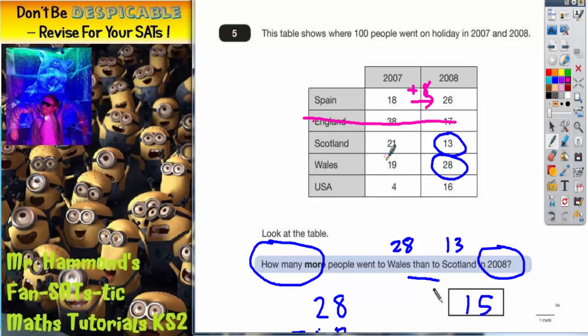Scotland went down from 21 to 13 so we can rule that out because that's not an increase, that's a decrease. Wales went from 19 to 28. Well that is an increase. So 19 to 28, if you work it out, is plus 9. And USA is 4 to 16. That is also an increase. So that's plus 12.